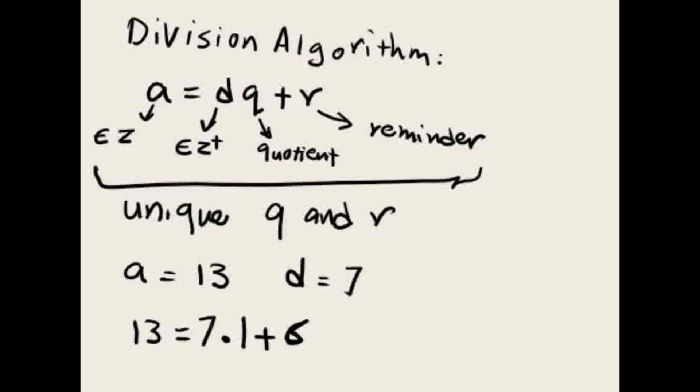Another thing that you have to keep in mind is that your remainder has to be either equal to 0 or greater than 0, but it has to be less than D. So in this case it has to be less than 7, which it is—it is 6.